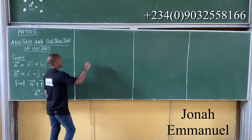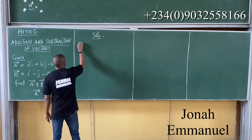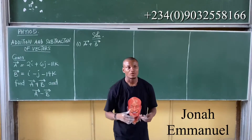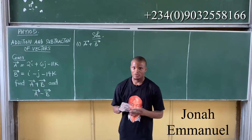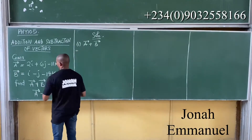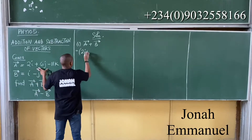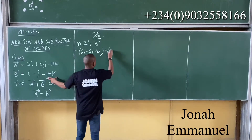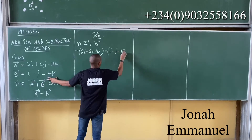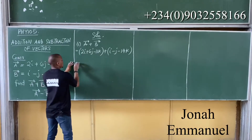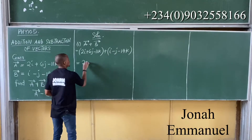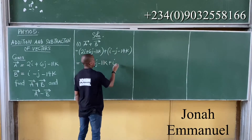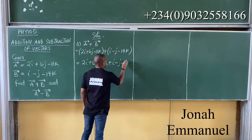So how do I do this? The solution is very simple. To find A plus B, I would advise placing the two vectors in brackets. So A plus B equals (2i plus 6j minus 11k) plus (i minus j minus 14k). Taking off the brackets, it becomes 2i plus 6j minus 11k plus i plus minus j plus minus 14k.